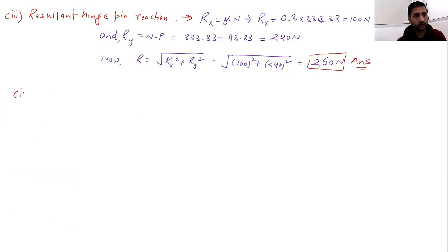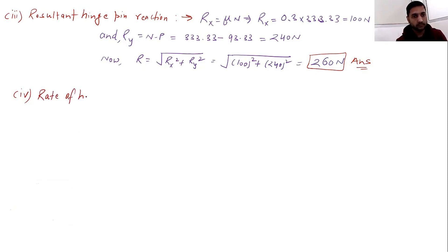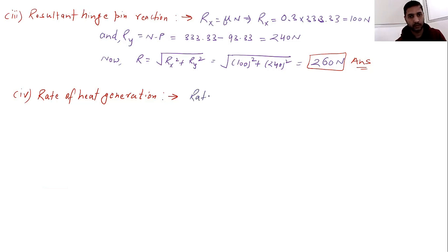Finally, the rate of heat generation equals frictional force times average velocity, that is μN × v_avg.